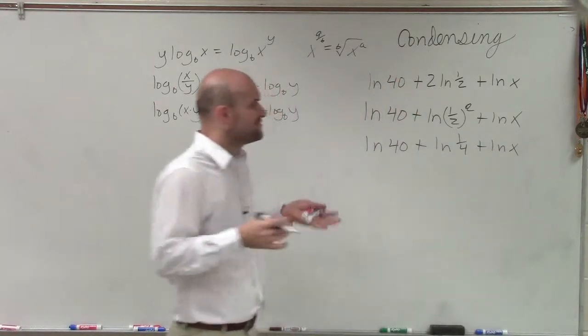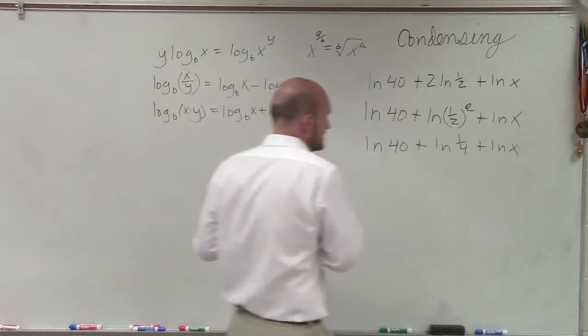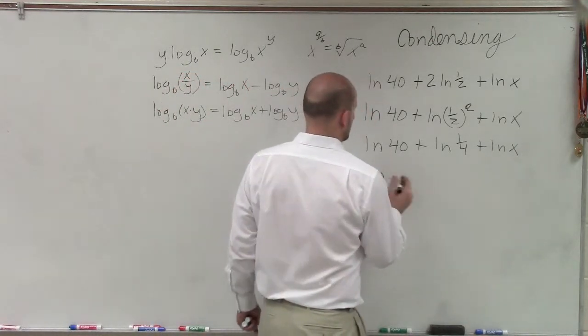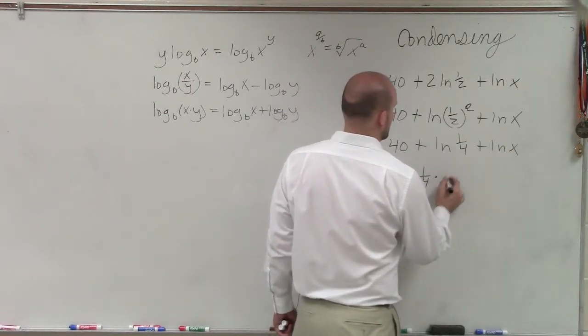Since we have the addition of all these natural logarithms, which all have the same base, I can rewrite this as the product. So therefore, that's going to be ln of 40 times 1 fourth times x.